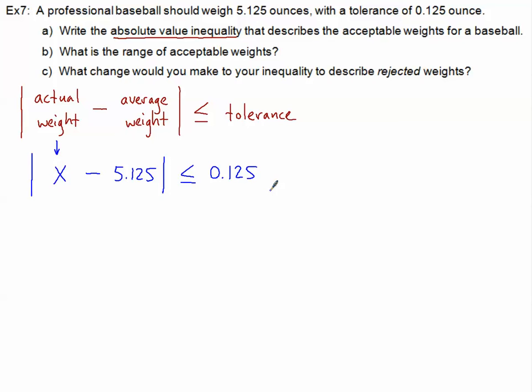We put the average value in here, whether it's a weight or something else, and then the tolerance, the margin of error, goes on the outside. And we have a less than or equal to right there.